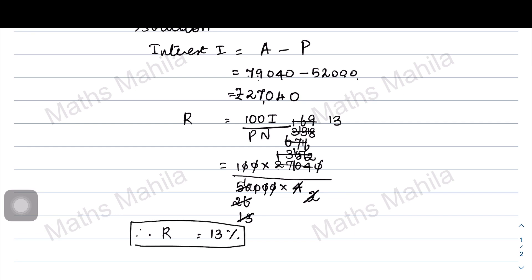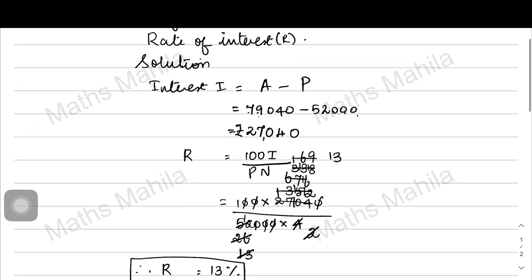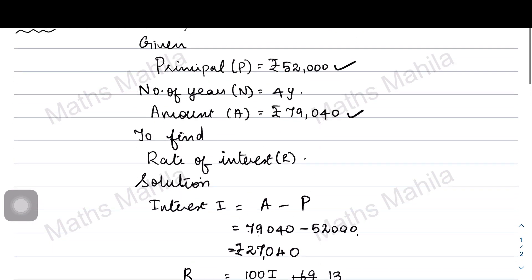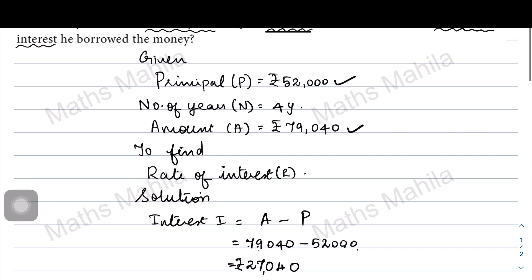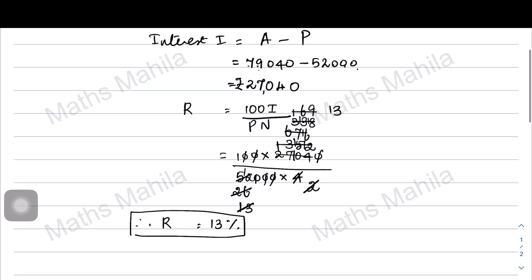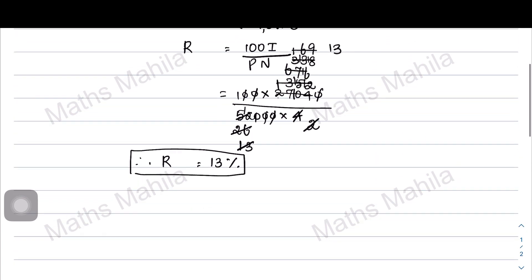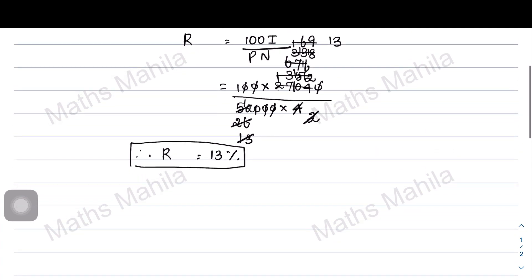So, if 52,000 was borrowed and 79,040 was repaid after 4 years, the rate of interest is 13 percentage. Thank you.